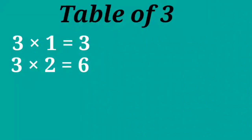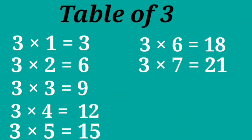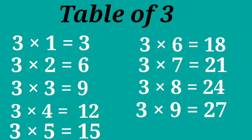Three ones are three, three twos are six, three threes are nine, three fours are twelve, three fives are fifteen, three sixes are eighteen, three sevens are twenty-one, three eights are twenty-four.